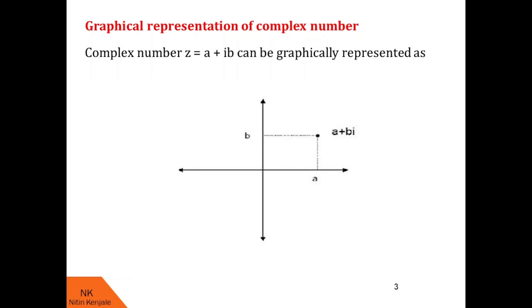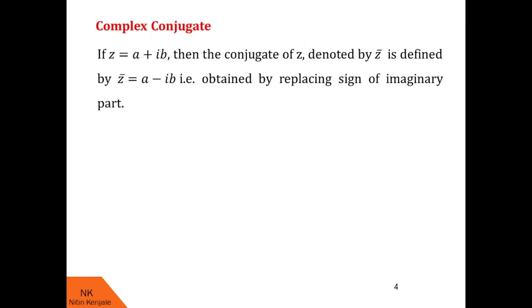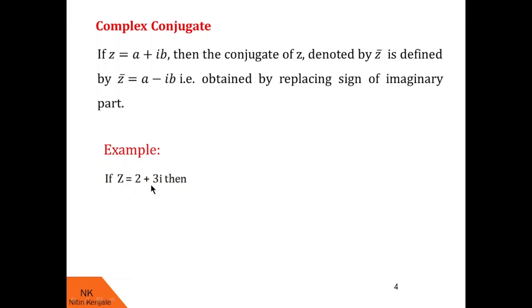Now let us go ahead with the next concept called the complex conjugate of a complex number. If z equal to a plus ib is the given complex number, then its conjugate, denoted by z-bar, is defined as a minus ib. It is obtained by simply replacing the sign of the imaginary part. For example, if z is equal to 2 plus 3i, then its complex conjugate z-bar is 2 minus 3i.